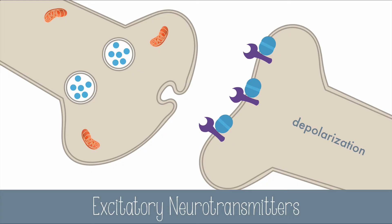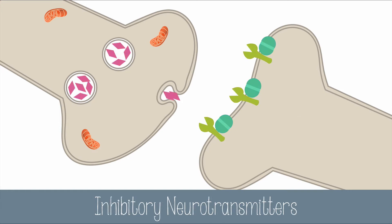This could be enough to send an action potential down the postsynaptic neuron, but not all neurotransmitters behave this way. Inhibitory neurotransmitters have an opposite effect — they prevent the formation of action potentials in the postsynaptic neuron by hyperpolarizing the cell.